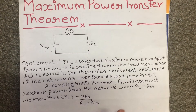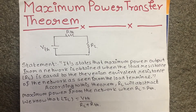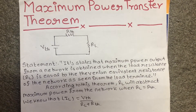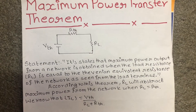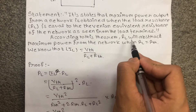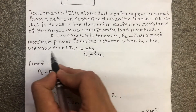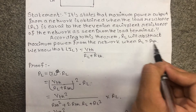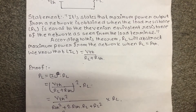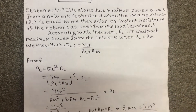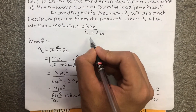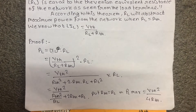According to this theorem, RL will extract maximum power from the network when RL equals Rth. This is used to achieve maximum power output. The current is a function of the problem where Vth equals RL plus Rth.